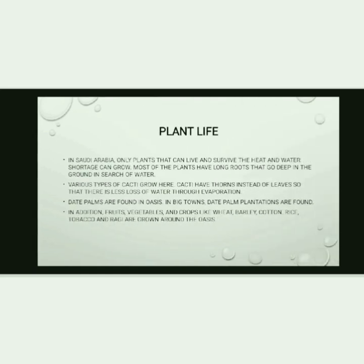Plant life: In Saudi Arabia, only plants that can live and survive the heat and water shortage can grow. Most plants have long roots that go deep into the ground in search of water. Various types of cacti grow here. Cacti have thorns instead of leaves so that there is less loss of water through evaporation. Date palms are found in oases, and in big towns date palm plantations are found.